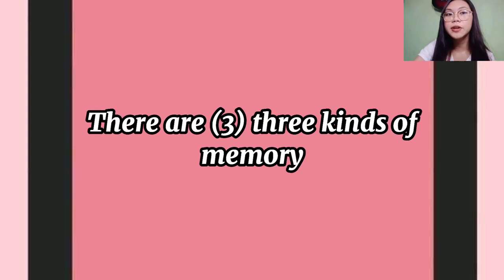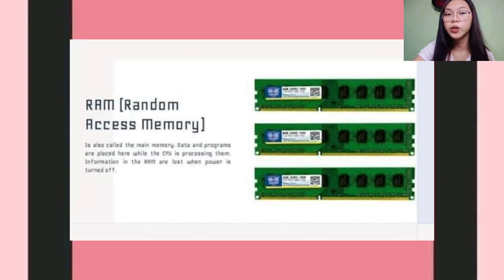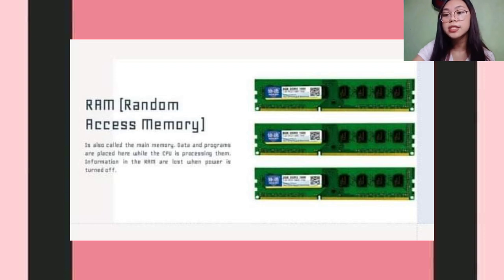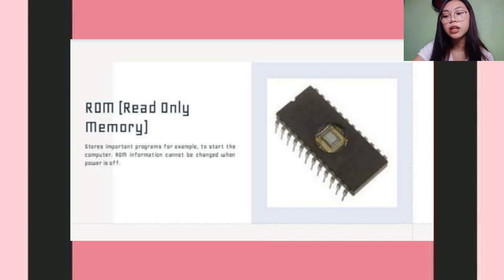There are 3 kinds of memory. Number 1 is RAM, or Random Access Memory, also called the Main Memory. Data and programs are placed here while the CPU is processing them. Number 2 is ROM, or Read Only Memory, which stores important programs — for example, to start the computer.